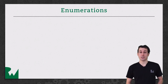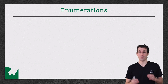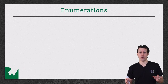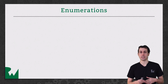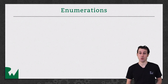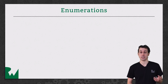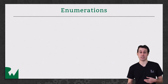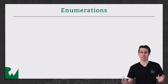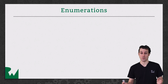Enumerations — you can think of those as a way of defining a list of values of which you can only select one of them. An example would be, say you're making an app to keep track of video games, and you want to keep track of what type of video game this is. It might be an RPG game, it might be a strategy game, it might be an action game. You can make a list of these potential values — that's called an enumeration of those values.